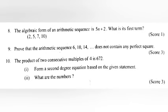Problem 8: The algebraic form of an arithmetic sequence is 5n + 2. What is its first term? Answer: 7.